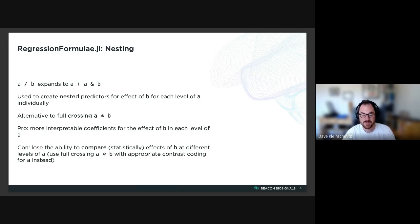And if you want to do that, if that's more important than having an interpretable model where you get effects of b individually, then it's better to use this full crossing a * b with the appropriate contrast coding for a. And that will give you predictors that correspond to the differences between the effects of b across different levels or combinations of levels of a.